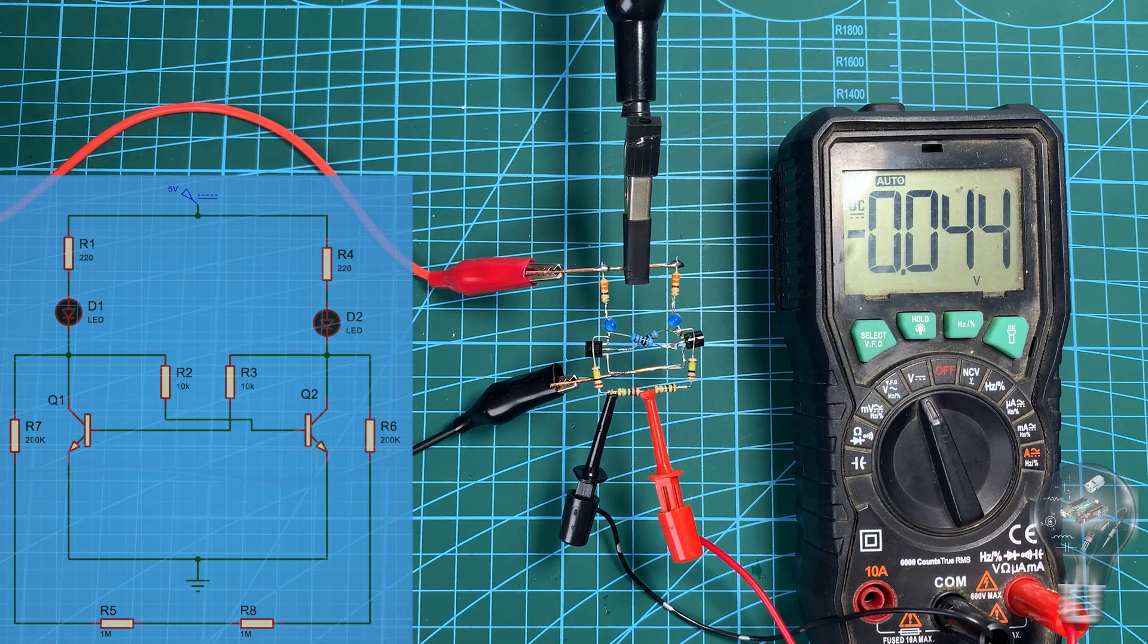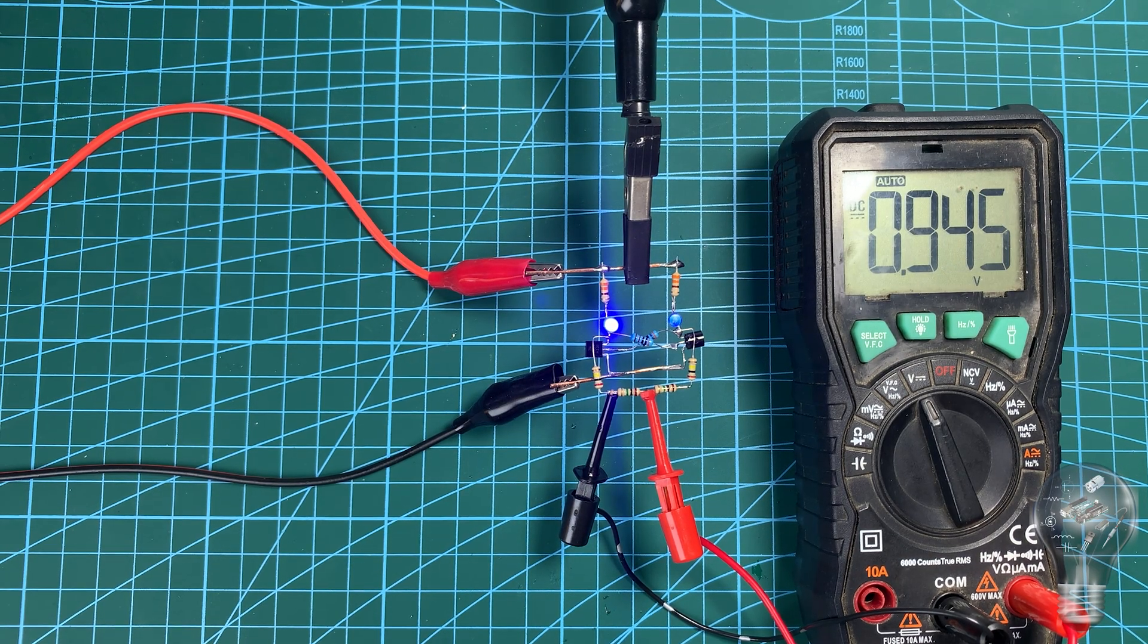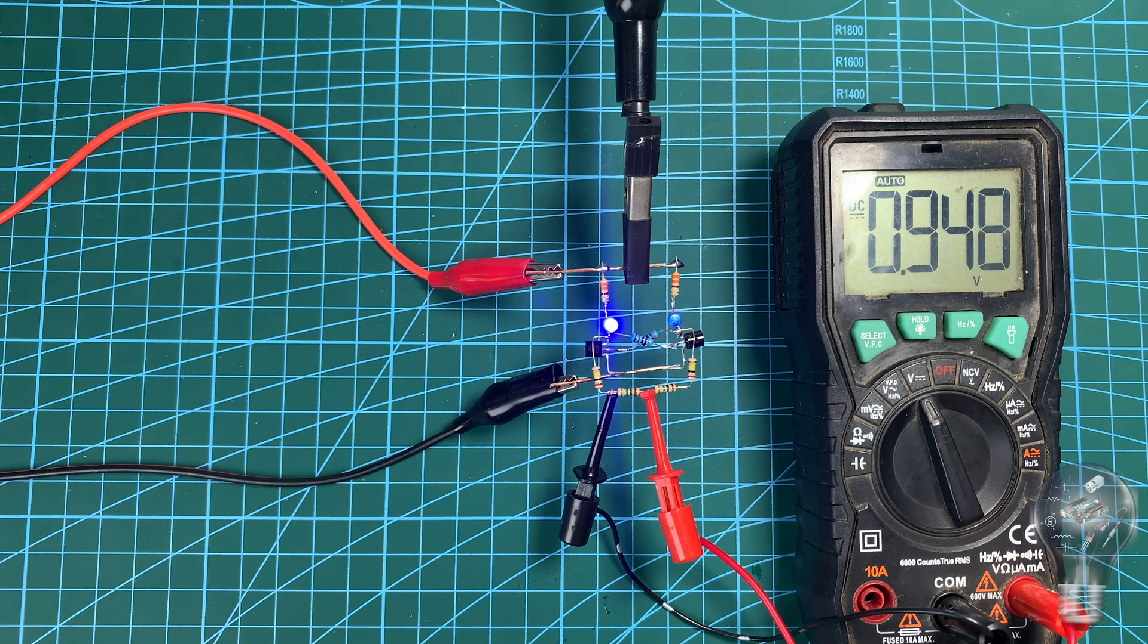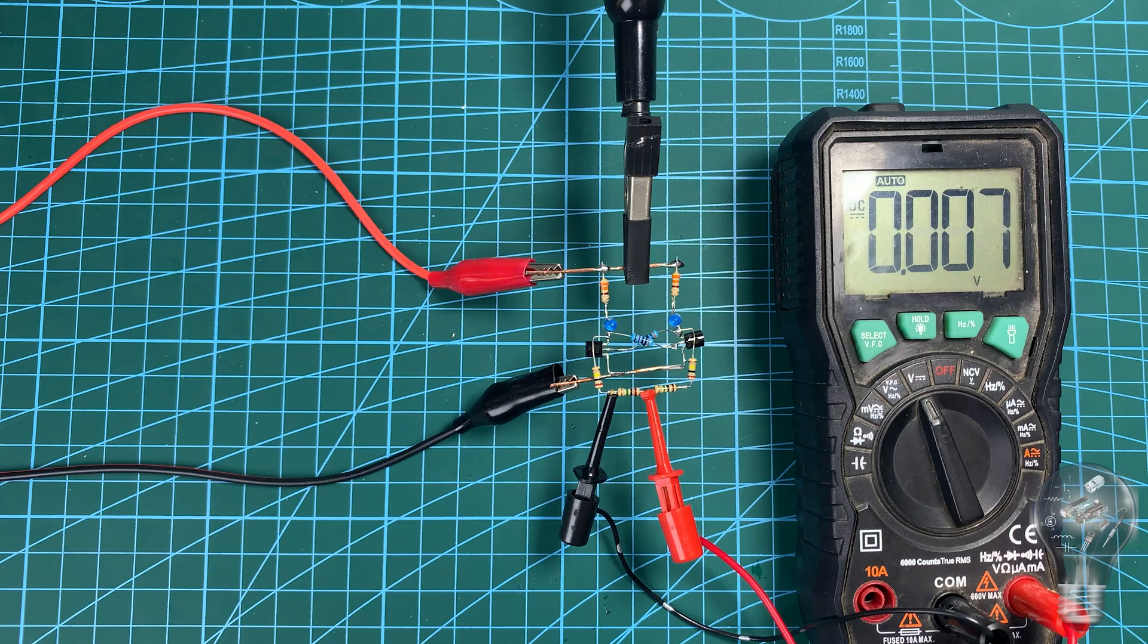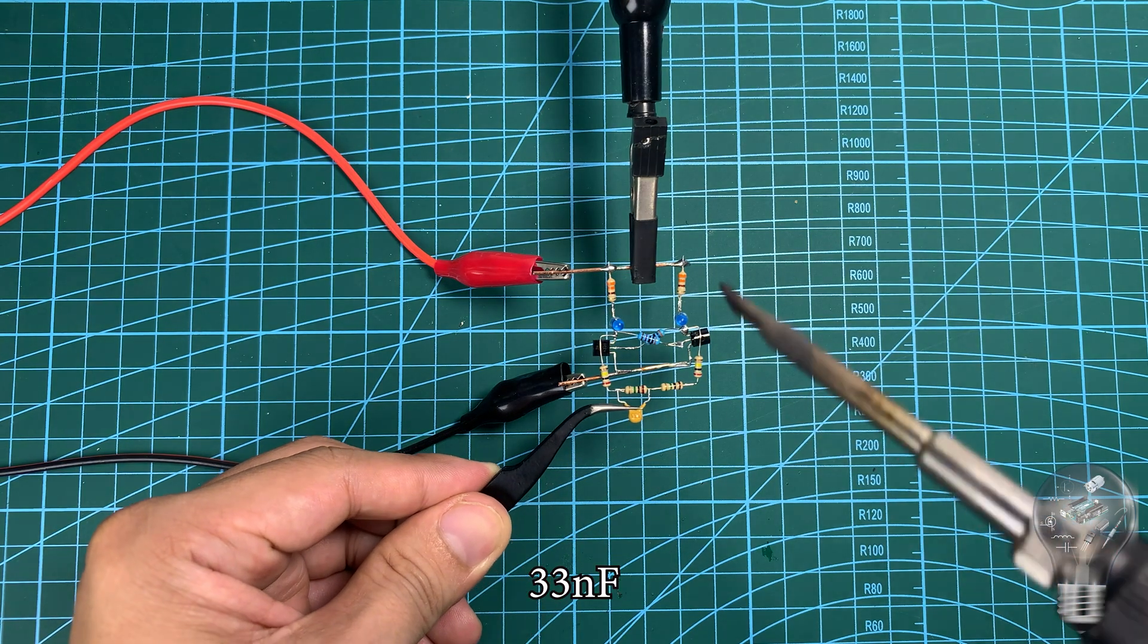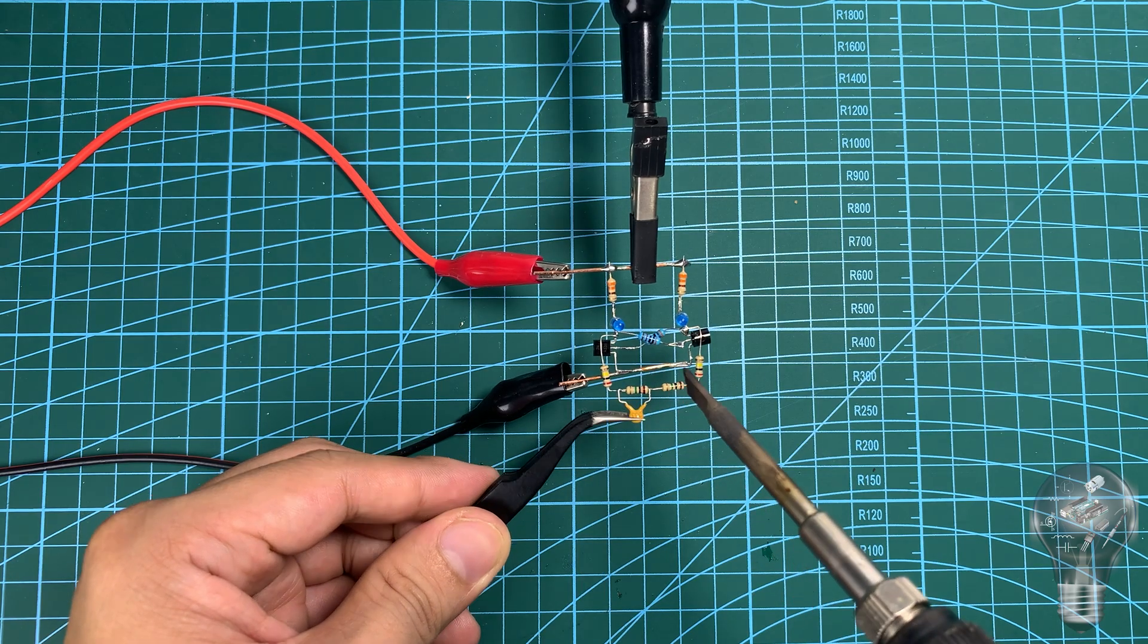When checking the voltage at the midpoint, we see a value of about 0.95 volts. This voltage will be used to trigger the state change. To make it more stable, we connect two capacitors in parallel with the two 1 mega-ohm resistors. In this way, the resistor network not only divides the voltage, but also charges the capacitors.